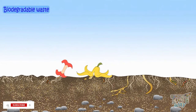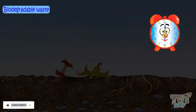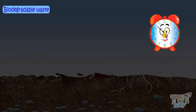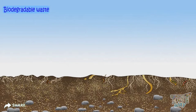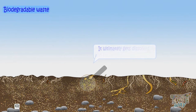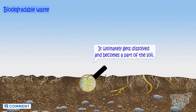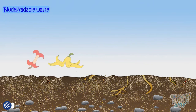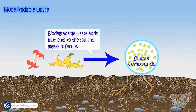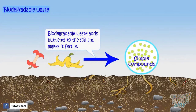For example, if you throw some food waste in the soil and let it stay there for a few days or weeks, you will not find it anymore, as it ultimately gets dissolved and becomes part of the soil. It breaks down into simpler substances, which are actually nutrients that add to the nutritive value of the soil and make the soil fertile.